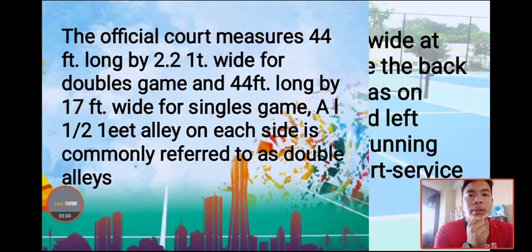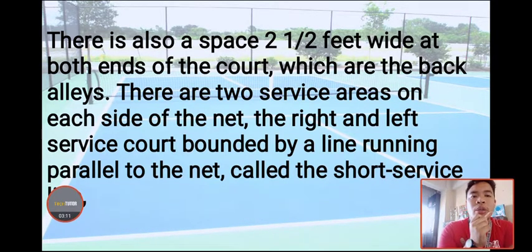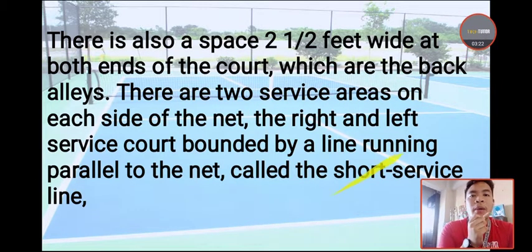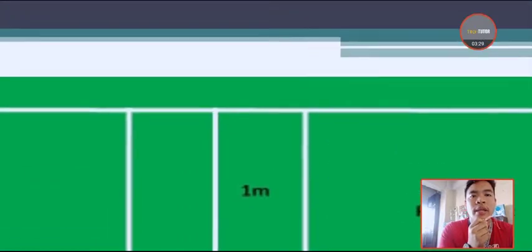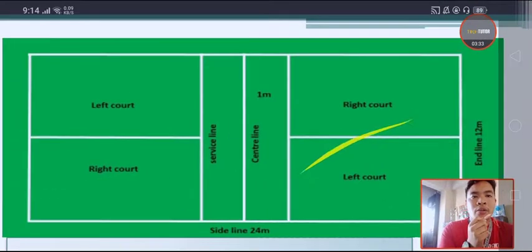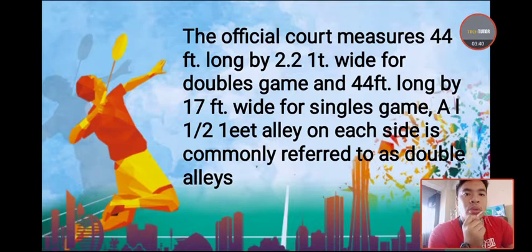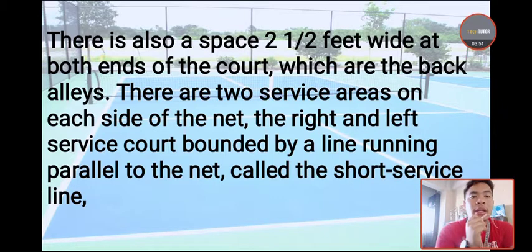There is also a space two and one-half feet wide at both ends of the court, which is the back alley. There are two service areas on each side of the net — right and left service courts — bounded by a line running parallel to the net called the short service line. The back alley is the end line of the court; if the shuttlecock lands there, it is out. You must use the short service line to avoid hitting the back alley.